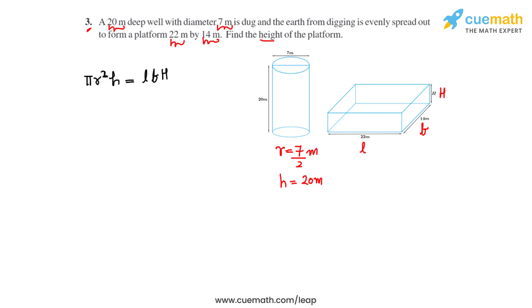So by rearranging, we get capital H to be equal to πr²h divided by LB. Now let's substitute the values that we know. So we write it as 22 by 7 times 7 by 2 times 7 by 2.